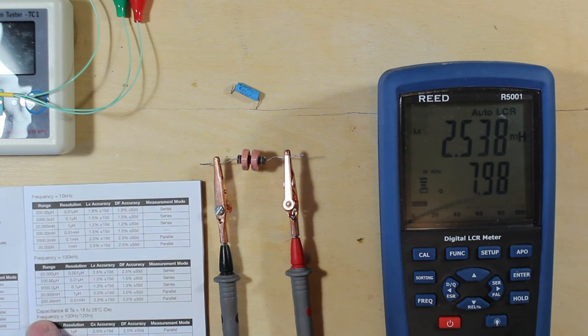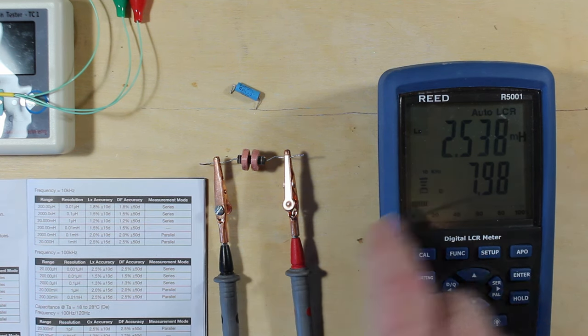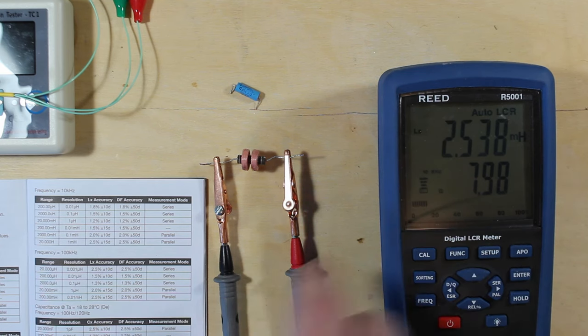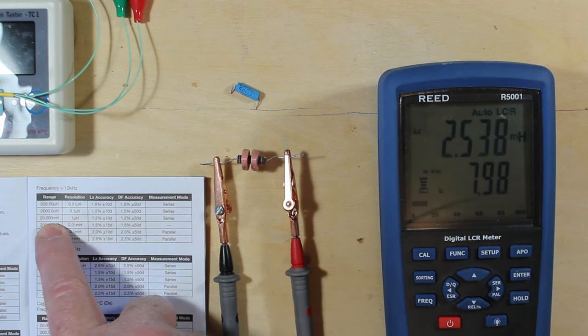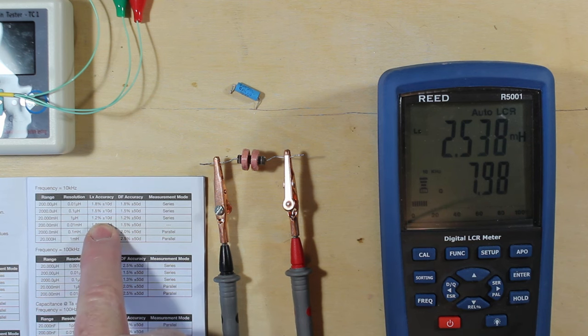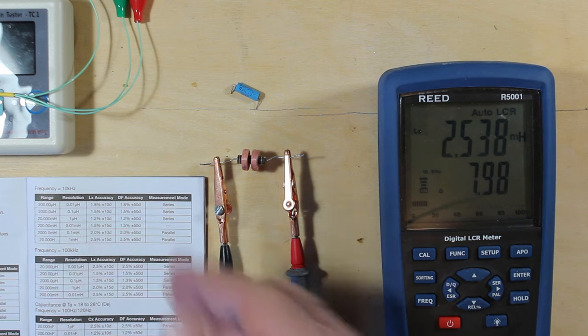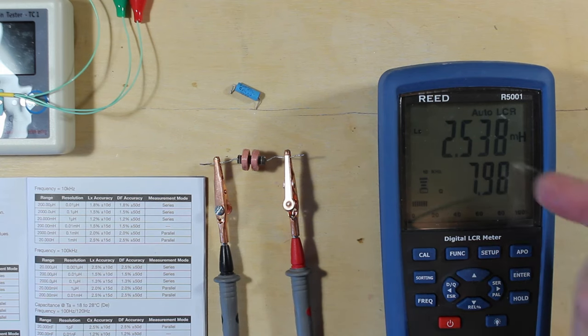And if we look in the book here, we are on the 10 kilohertz frequency. This does multiple test frequencies, but on the 10 kilohertz frequency, under the 20 millihenry range here, it's 1.2 percent accuracy. So that's pretty close.